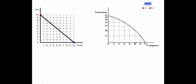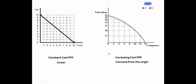Notice here we have two Production Possibilities Curves. One is what we call a Constant Cost Production Possibilities Frontier, and the other is called an Increasing Cost Production Possibilities Frontier. With a Constant Cost PPF, it is linear — meaning it's a straight line. With an Increasing Cost PPF, it is concave from the origin, bowed out from the origin.